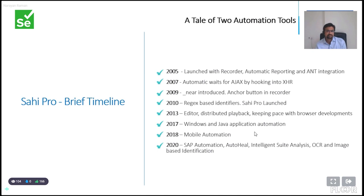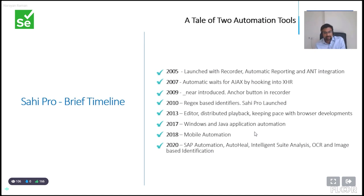Around 2010, we added regex-based identifiers where you identify something with partial text. If something said 'Welcome Naresh,' you could just identify it as 'welcome' and then check whether 'Naresh' exists there. In 2009-2010, we launched SahiPro. Over the next few years, we added better editor frameworks, much better reporting, and kept pace with HTML5-based developments. Around 2017, we added Windows and Java application automation, and then mobile automation, SAP automation, auto-healing of scripts, intelligent suite analysis, optical character recognition, and image-based identification.